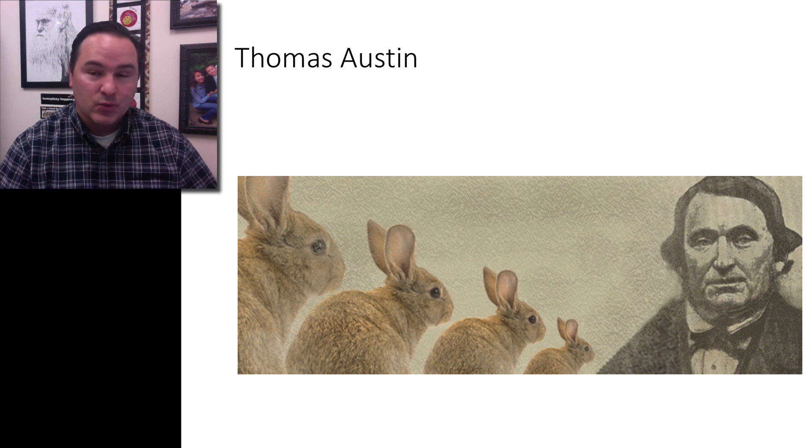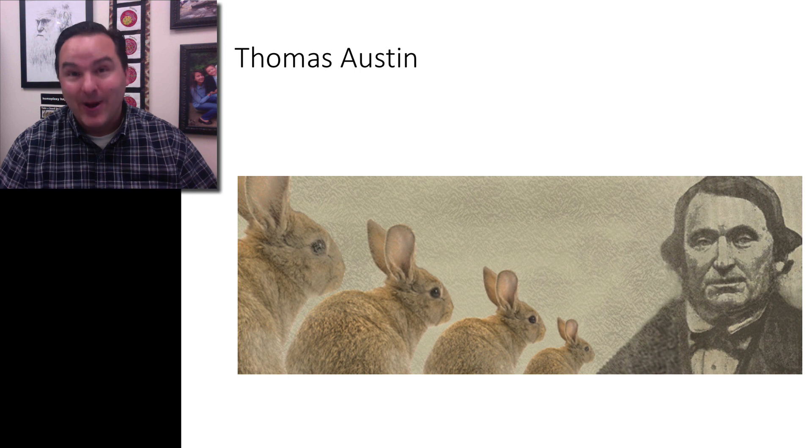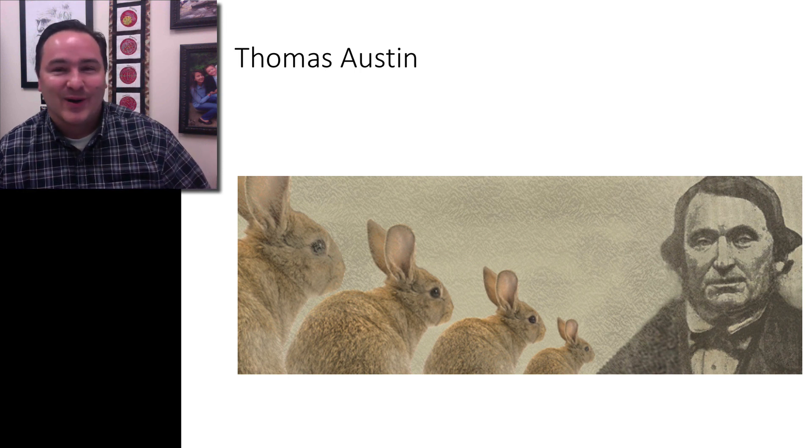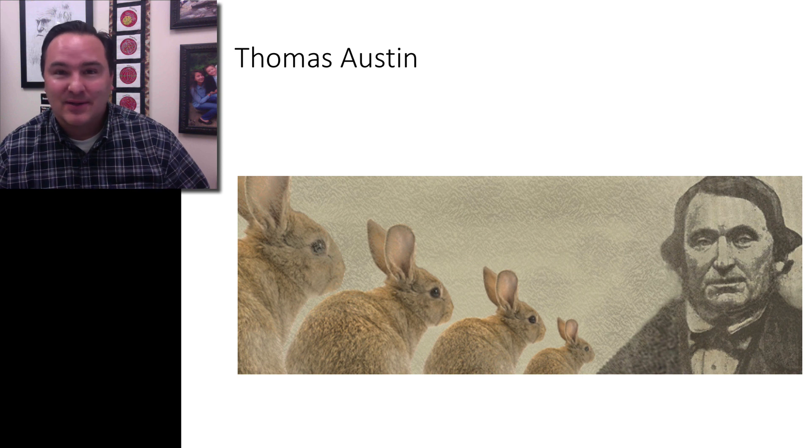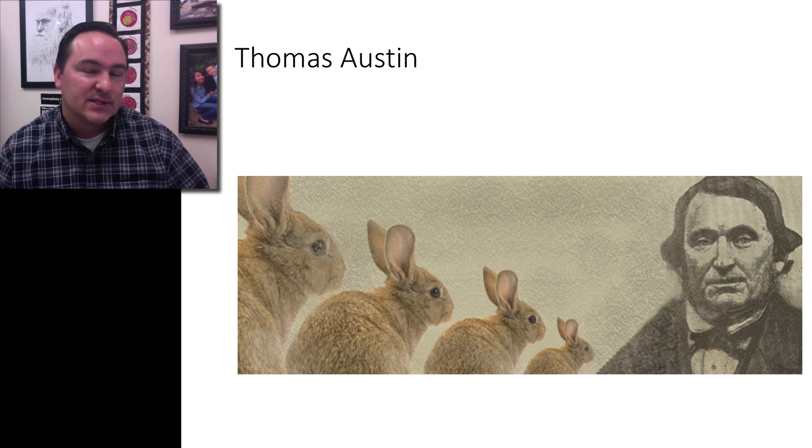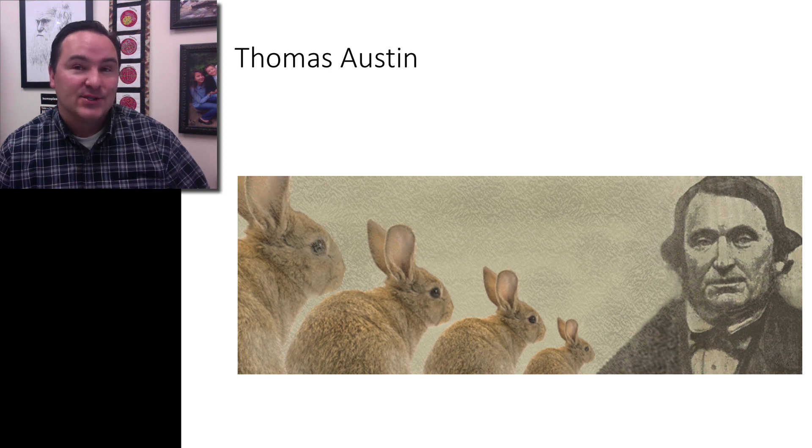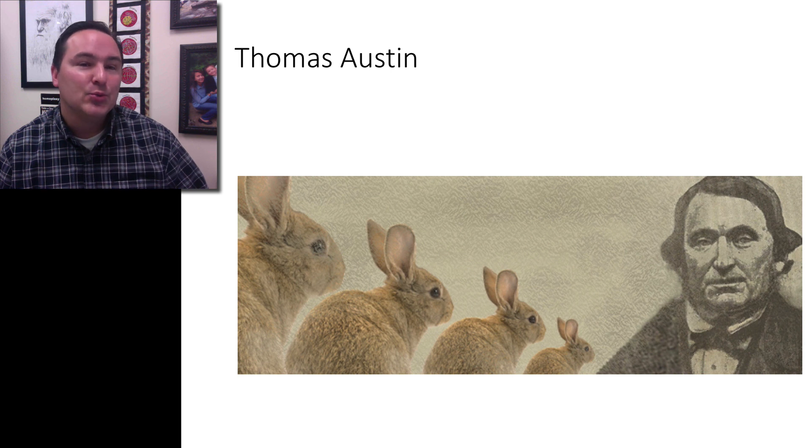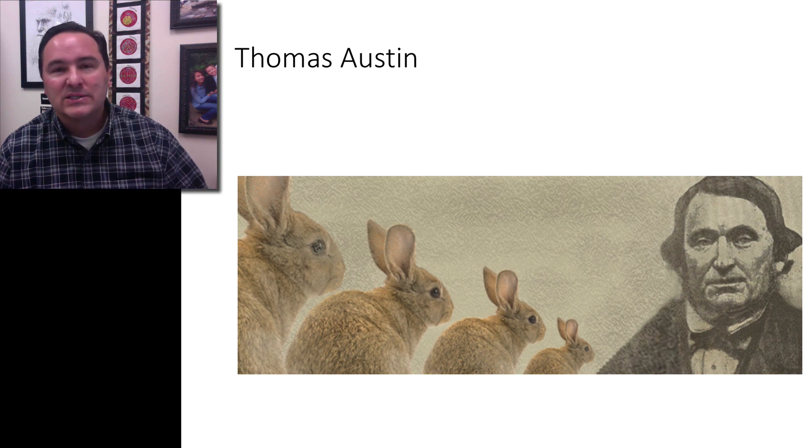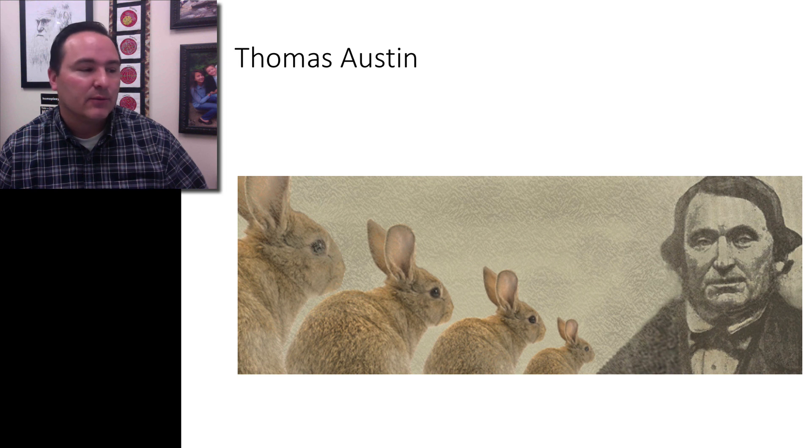Because rabbits can reproduce like rabbits, they quickly were increasing in numbers. Australia was a very suitable climate for rabbits. So within six years, this population that started off as 24 rabbits had increased to 22 million rabbits in just six years. By the 1930s, Australia's rabbit population was estimated to be over 750 million rabbits.